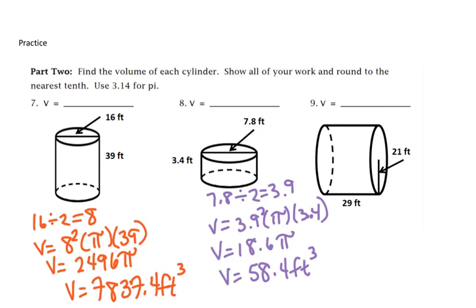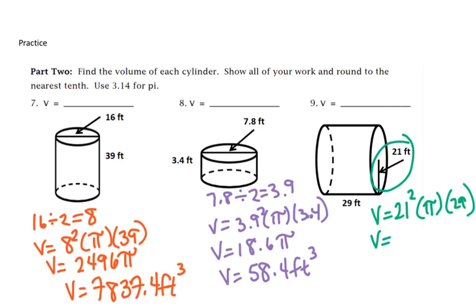In our last example, we do have a radius — it is going halfway — so I'm going to do volume equals our radius squared, 21 squared times pi times 29. When we multiply that together, we'll get 12,789 pi. We put all of it in our calculator, we'll get 40,157.5 feet cubed.